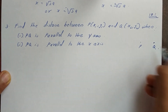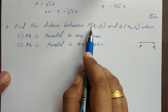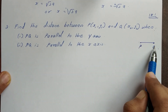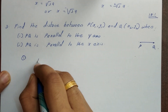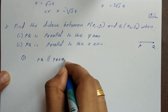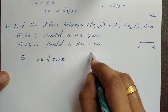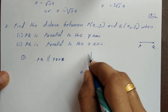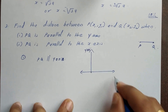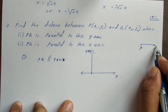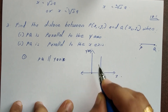When PQ is parallel to the x-axis, these two points have coordinates. Find the distance between PQ. We have two conditions: first condition is PQ is parallel to the y-axis, and this is the y-axis. This is the x-axis.